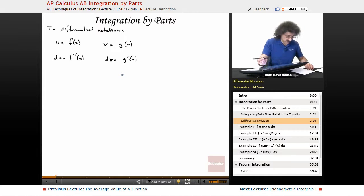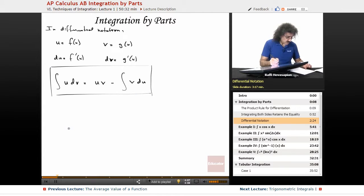So with that notation, what we have is the following. We have the integral of u dv is equal to u v minus the integral of v du. So this is the way we're actually going to use the integration by parts.